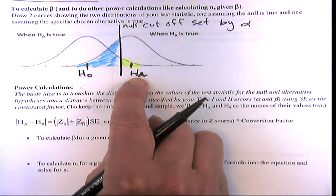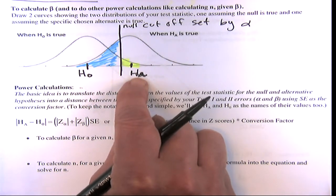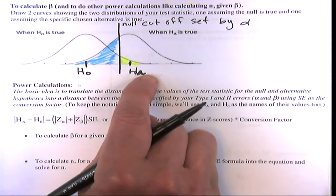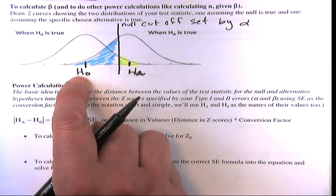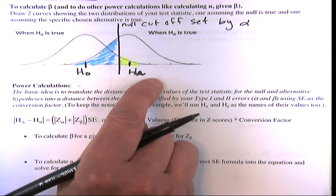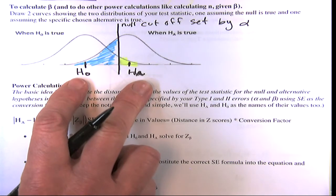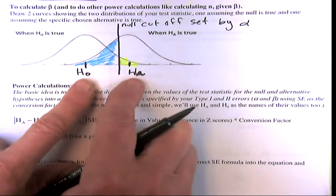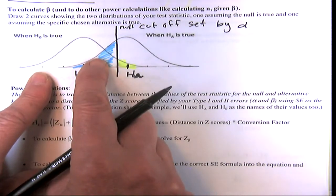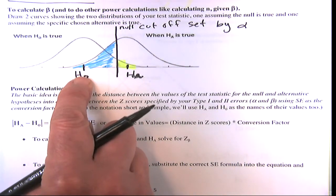For the flu vaccine example: reduction equals zero would be the null (the vaccine doesn't work), and the alternative would be, say, a 2% or 4% reduction — the minimum difference that matters to us. We have two hypothesized values in actual units (percent reduction), and both distributions follow the normal curve, with widths determined by the standard error.